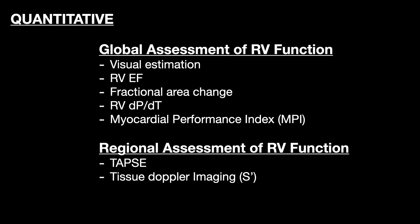We can also use quantitative measures to assess RV systolic function, and they can be global. Visual estimation isn't really quantitative, but it is global. We're going to talk about RV ejection fraction, fractional area change, RV dP/dt, and myocardial performance index. We'll also talk about regional assessment of RV function, including TAPSI and tissue Doppler imaging.